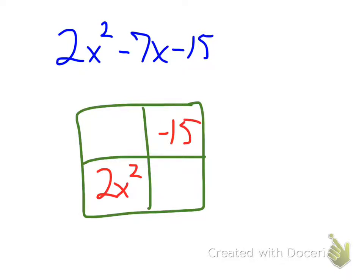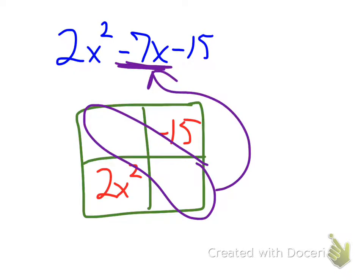My middle term, or my x term, these two added up to equal that. So when I combine like terms, those two have to add to be negative 7x.